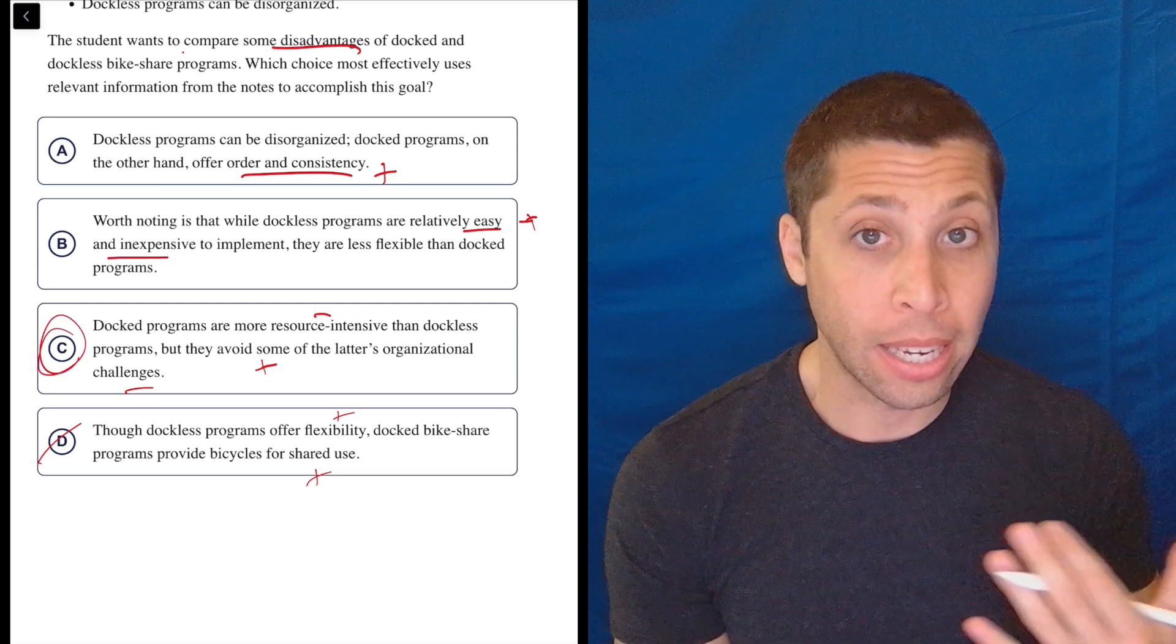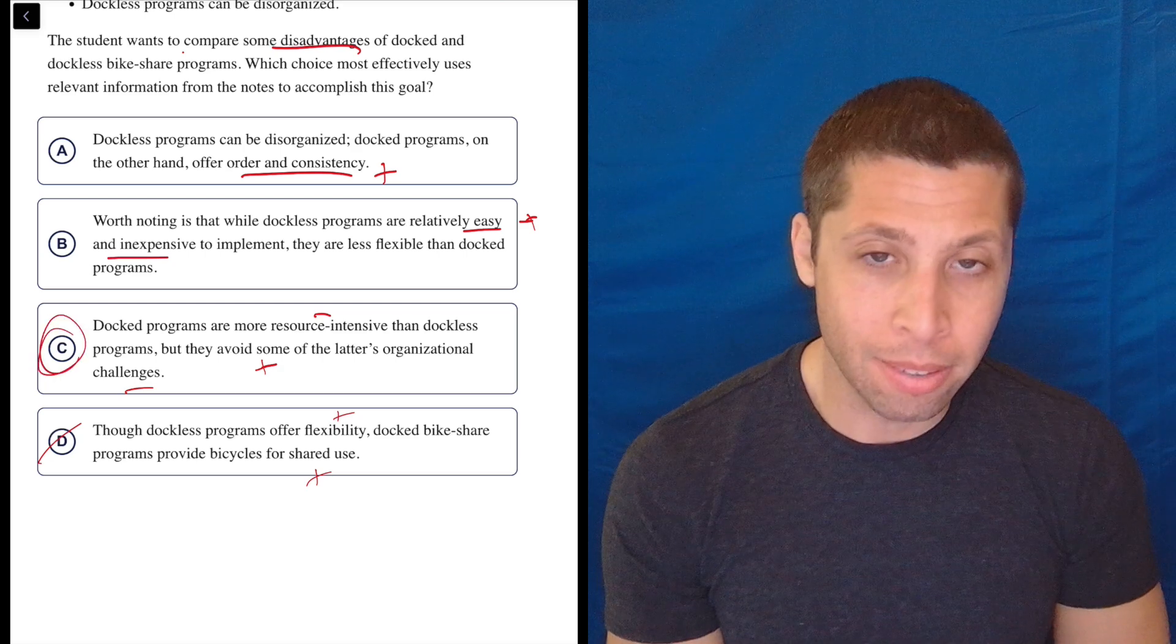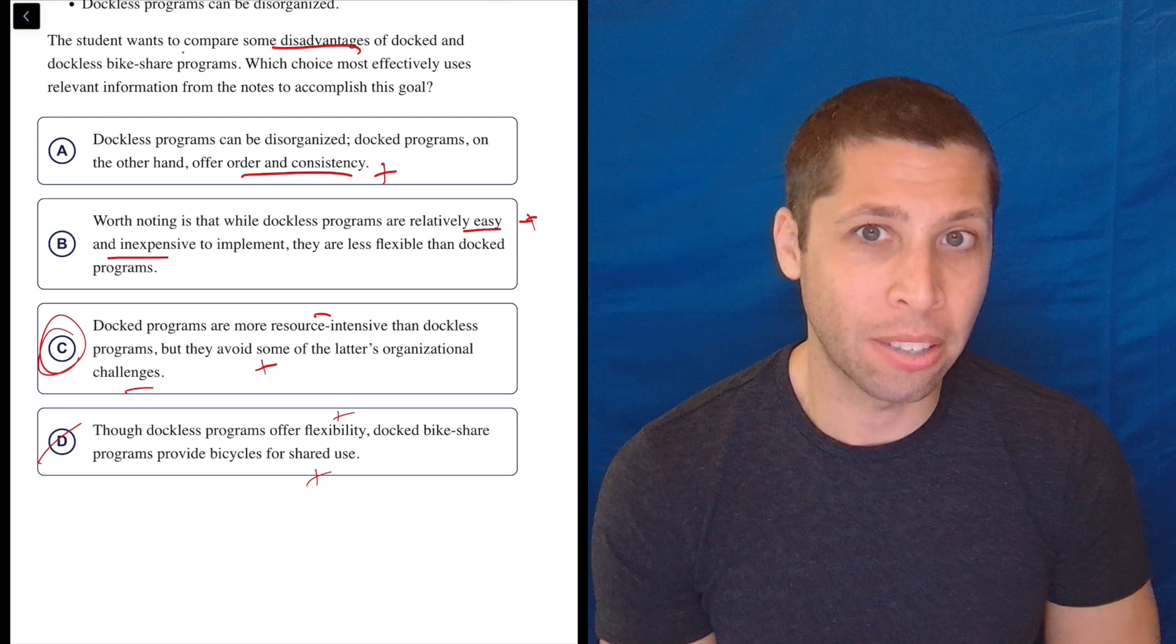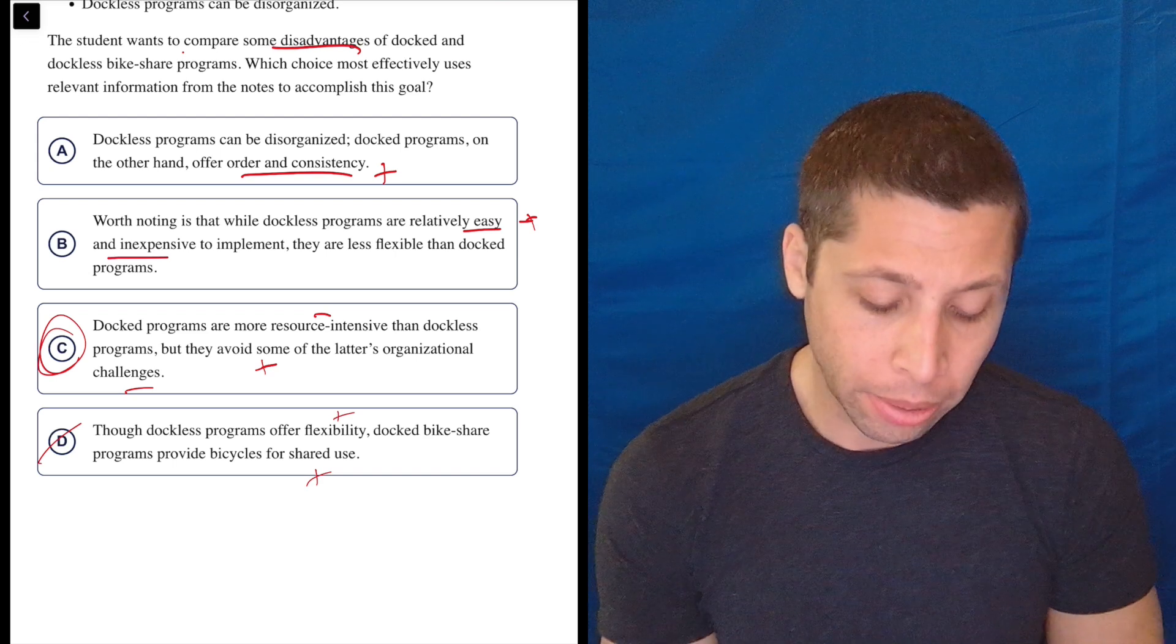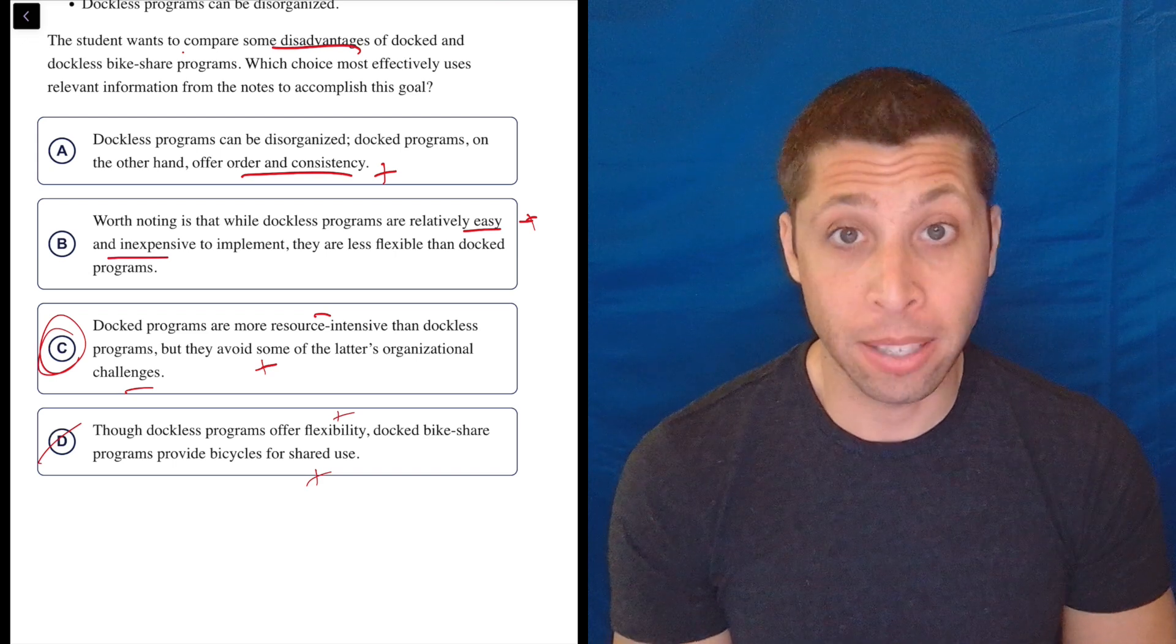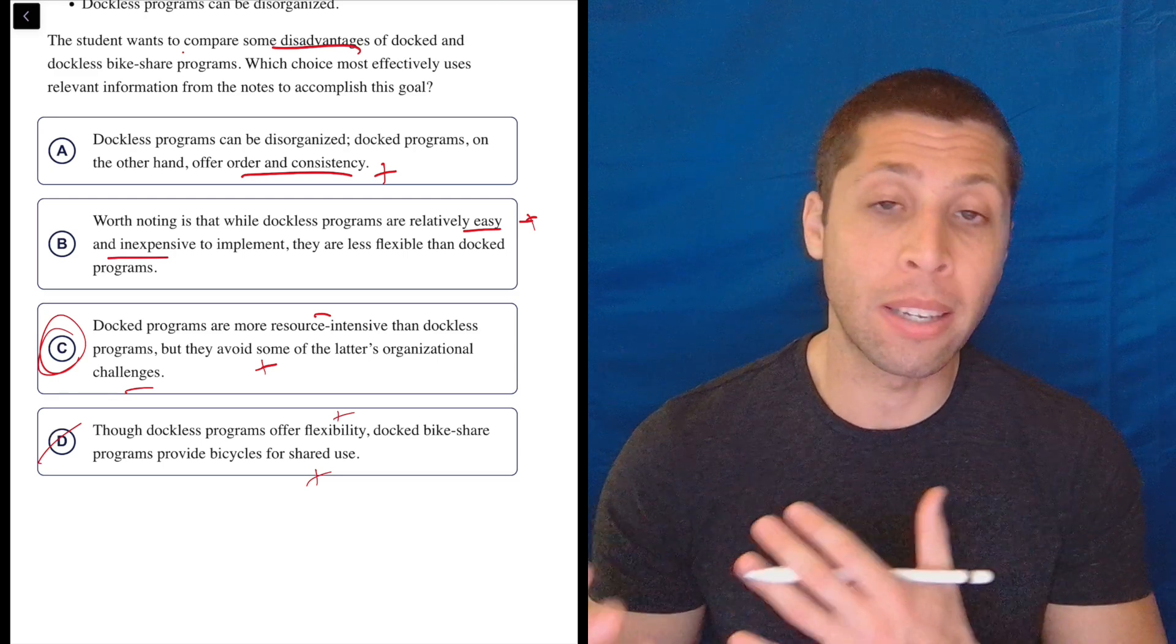It's the only one that really is hitting disadvantages pretty hard. The others are maybe dabbling in that and bringing up a disadvantage of one of the types. But what I really like about C, even though it's not direct about it, it is still giving me a disadvantage of each.